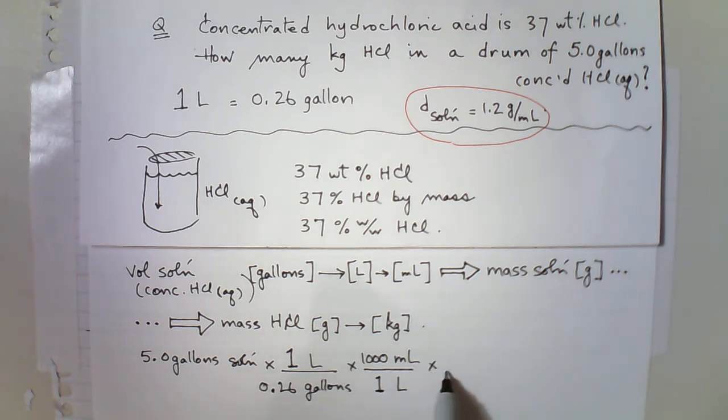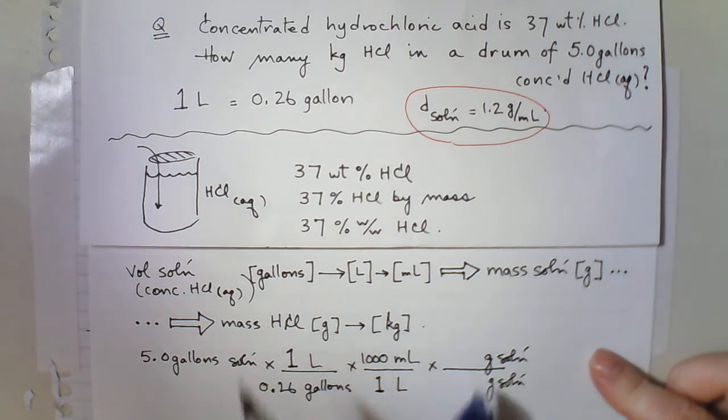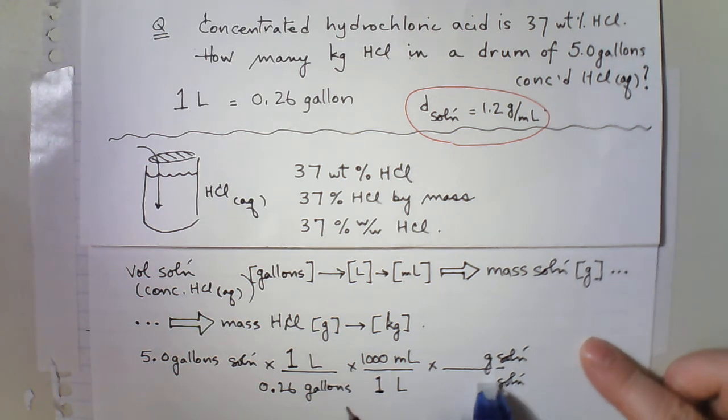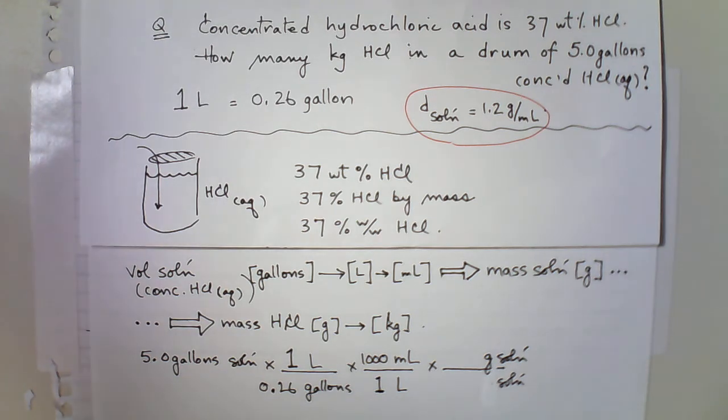And now I want to convert to the corresponding mass of solution in grams. Sorry. Wrote it on the wrong side. Keep it neat. Milliliters of solution. And we're given the density, 1.2 grams of solution per mL of solution. So that's my mass in grams of the solution.